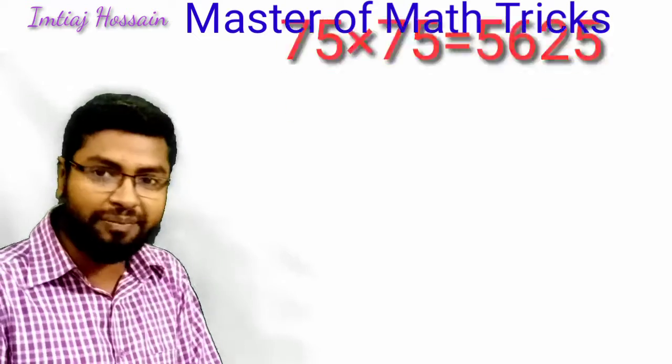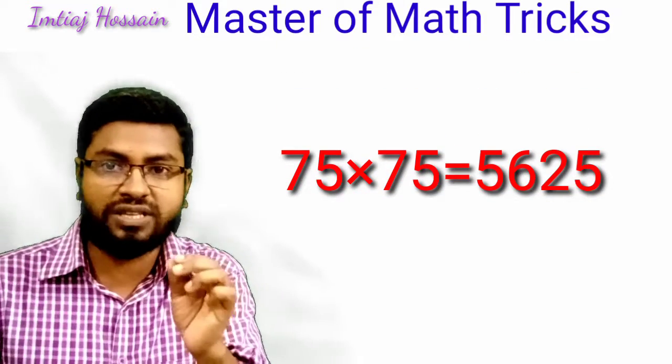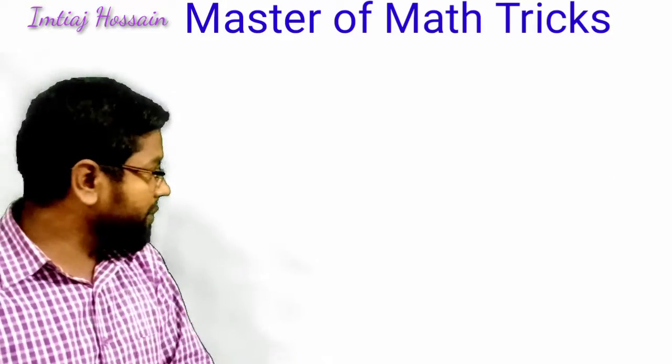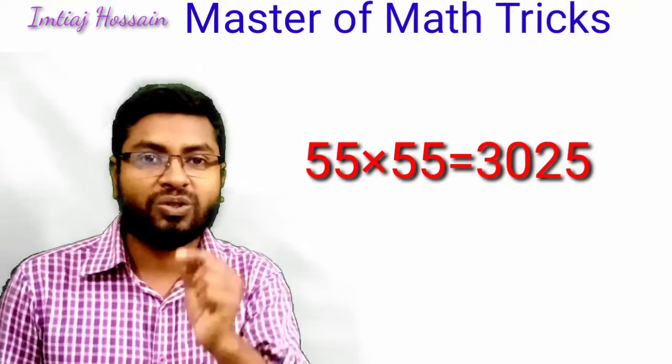75 times 75 equals 5,625. 55 times 55 equals 3,025.